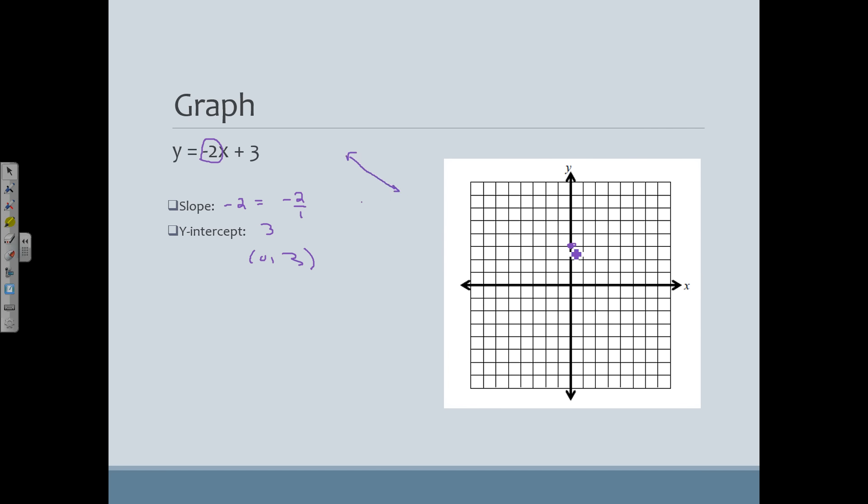So if I go down 2, so I'm just going to kind of go down 2, and then I'm going to go to the right 1. So notice I've gone in a negative direction here and a positive direction here. Positive 1. If I go down 2 again and over 1, I can graph another point. Down 2 over 1, I've got another point.